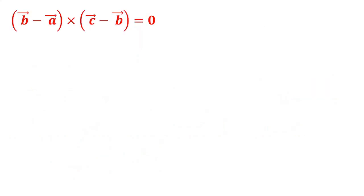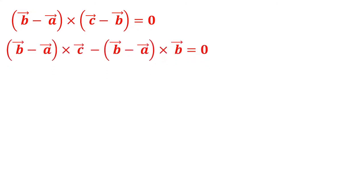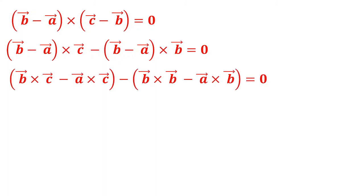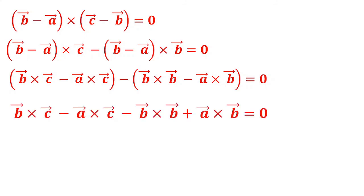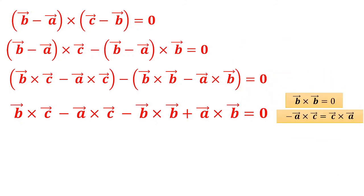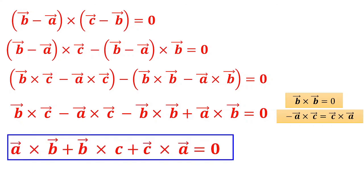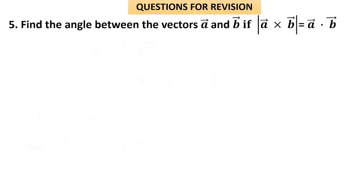Expanding (b − a) × (c − b): b × c − b × b − a × c − (−a × b) = 0. Using b × b = 0 and −(a × c) = c × a, this becomes a × b + b × c + c × a = 0, which is the required condition.